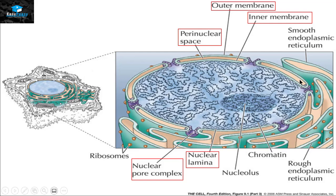Nuclear lamina is basically a kind of protein that gives stability to the nucleus. On the outer side of the membrane we have the endoplasmic reticulum, which can be smooth or rough endoplasmic reticulum. Inside the cell you have the nucleolus, and you can see chromatin material spread across the nucleus. The main organelle transporting proteins from the cytosol into the nucleus is the nuclear pore complex.